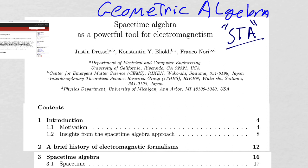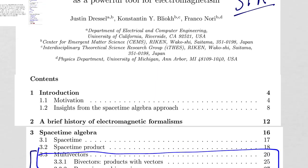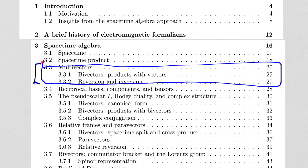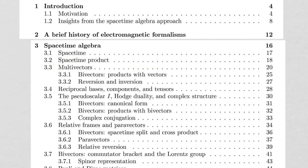Welcome back. We're continuing our dive into geometric algebra, a diversion away from QED prerequisites. The space-time algebra — abbreviated STA — is a powerful tool for electromagnetism and the vehicle by which we're learning this subject. We've made a lot of progress and are about to begin reading the paper's discussion of multivectors. We've done preparatory work, so this section should be accessible. After a little review and errata, let's begin section 3.3.